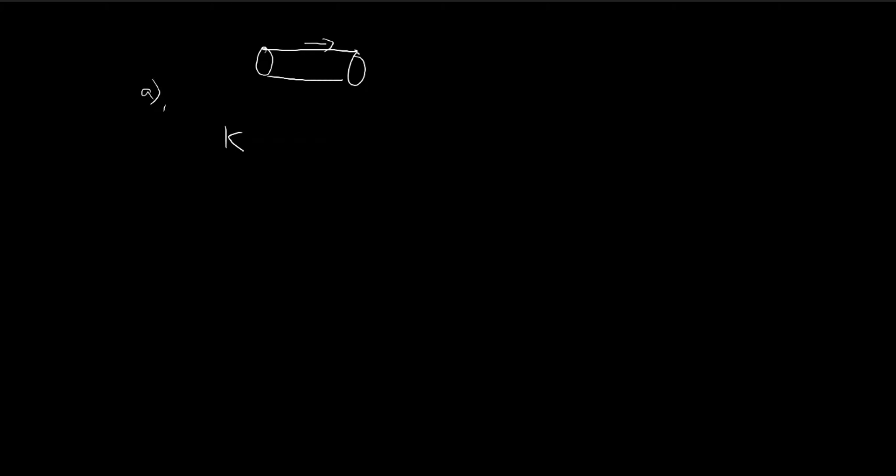So what is k? By definition, k, if you multiply it by the circumference, because k is some vector that's pointing along this direction, along the surface of the cylinder, and this cylinder has a radius of A. So k, if you multiply it by the circumference, that's going to be equal to the current. So k is just equal to I divided by 2πA. So it's that simple. This is k.